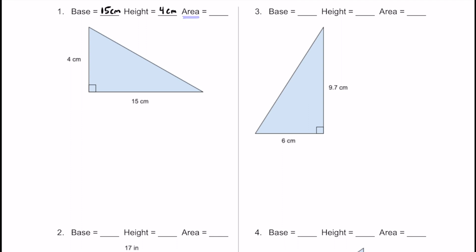Let's go ahead and calculate the area. It doesn't matter which formula you choose to use. For this first one, I'm going to use base times height divided by 2. We don't know the area, so let's keep it as capital A equals. The base is 15 centimeters, multiply it by 4 centimeters — the height — using parentheses to show the multiplication, and then divide by 2.